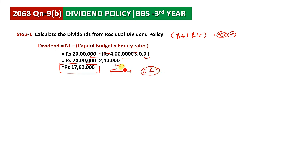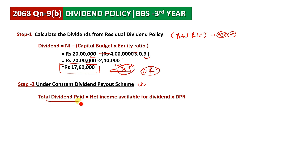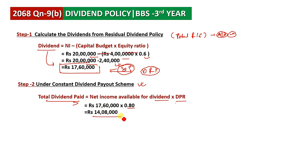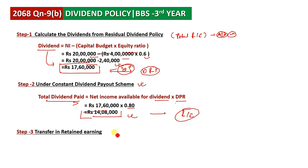Under the constant DPR scheme, the DPR ratio is 80%. Total dividend payout equals net income available for dividend multiplied by DPR. That is 17,60,000 into 80%, giving a dividend of 14,08,000. The actual dividend paid is 14,08,000 and the rest is transferred to retained earnings.